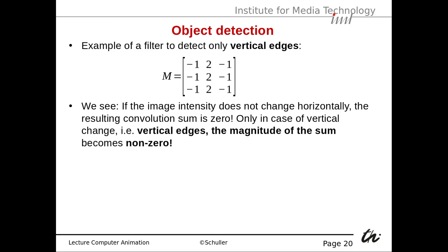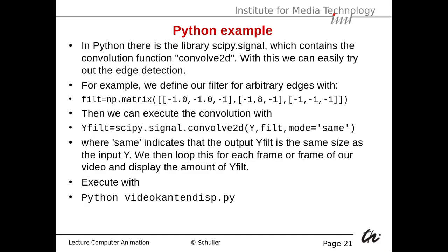So now we also have a vertical edge detector. These can be used for detecting objects. A cube consists of horizontal, vertical, and diagonal edges, so we can use those edge detectors to see where the edges are, and from that information determine if an object is a cube. Here is a Python example using the library scipy.signal.